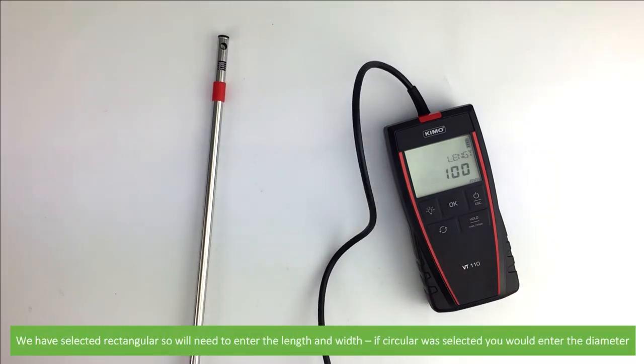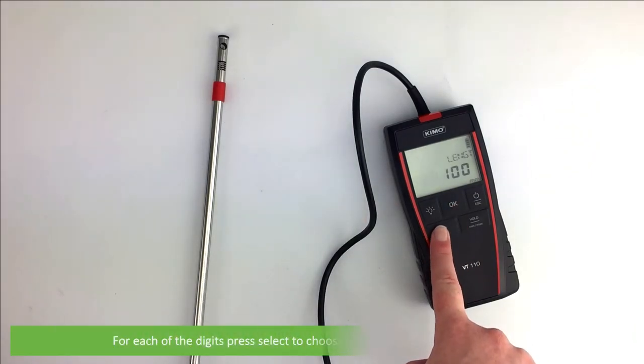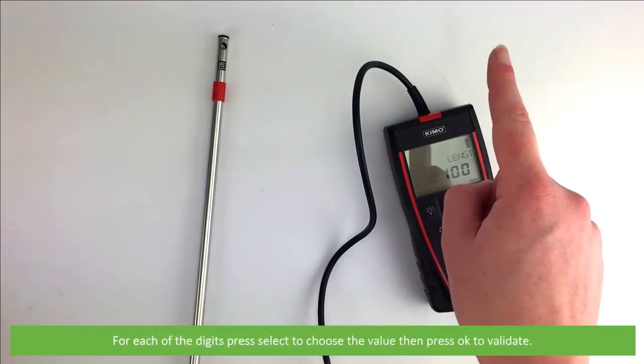We have selected rectangular, so we'll need to enter the length and width. If circular was selected, you would need to enter the diameter. For each of the digits, press select to choose the value, then OK to validate.